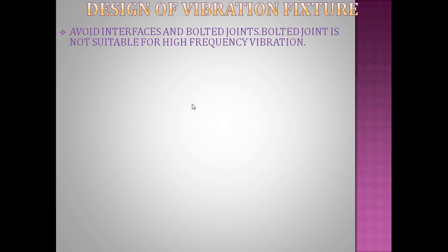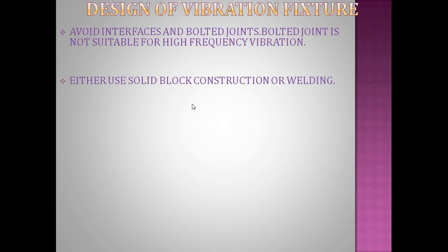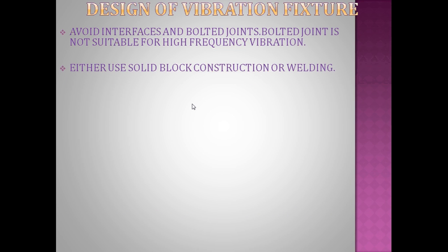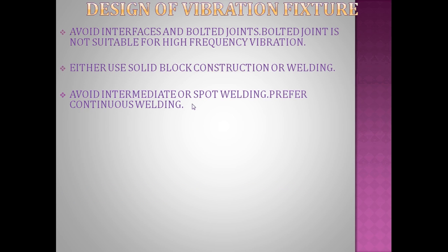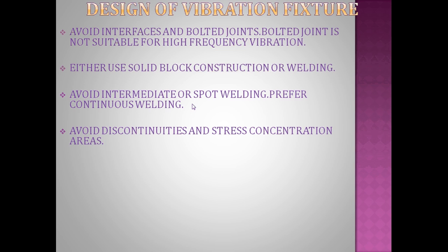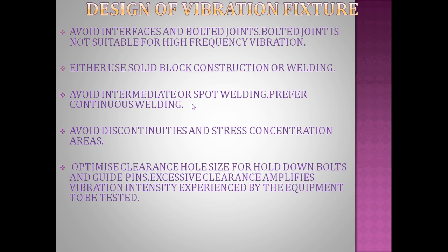Sixth, avoid interfaces and bolted joints. Bolted joints provide only point contact, not area contact. Since stress equals load per unit area, point contact results in higher stress. Therefore, prefer solid block construction or welding. Welding must be continuous — do not use intermediate or spot welding. Seventh, avoid discontinuities and stress concentration areas, as they reduce the stiffness and ultimately reduce the natural frequency of the structure.